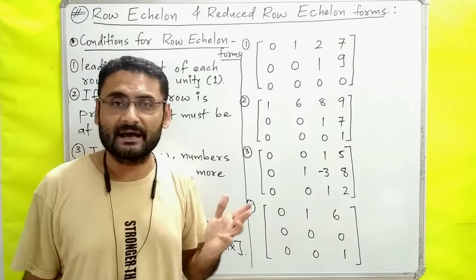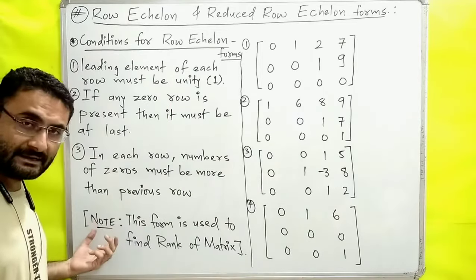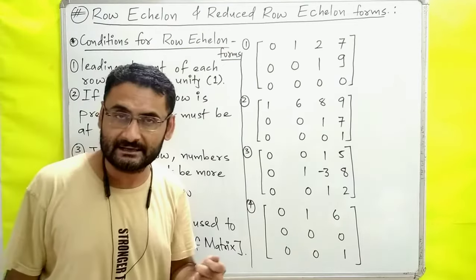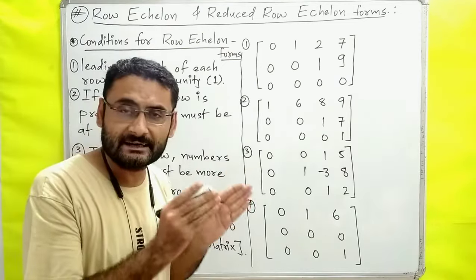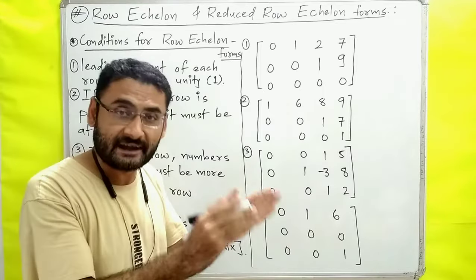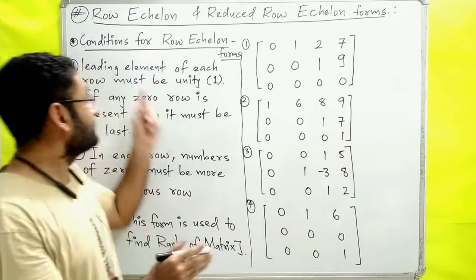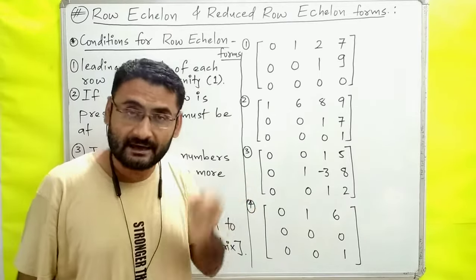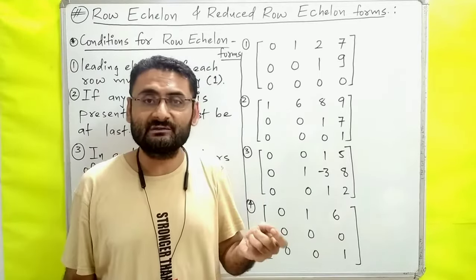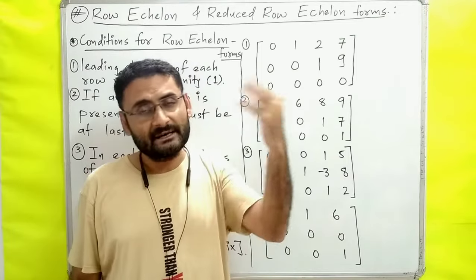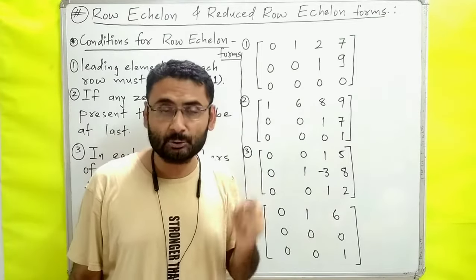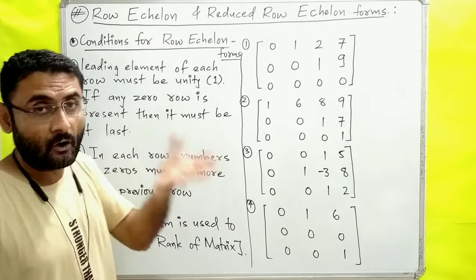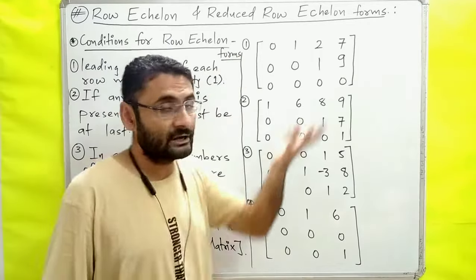What is the use of this row echelon form? This form is used to find the rank of a matrix. If we have a matrix and we need to find its rank, then row echelon form is going to do that work. How will we find the rank of matrix? All of these things we will do in the next video. In this video, we are going to study row echelon form and reduced row echelon form.